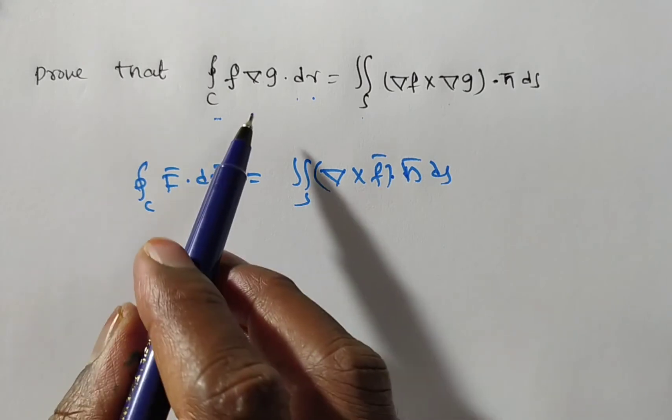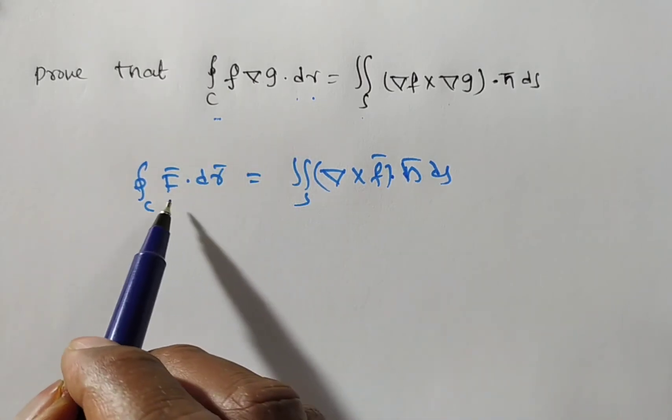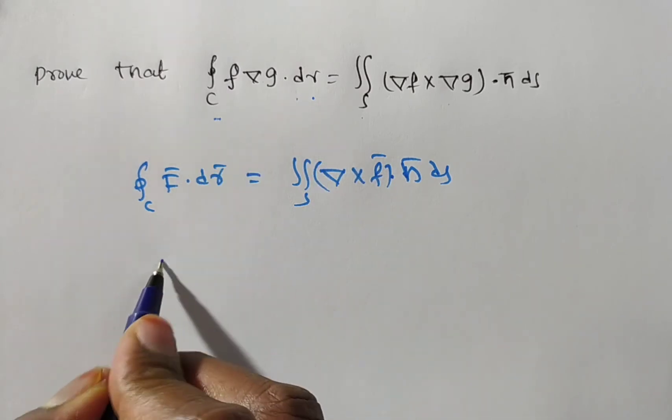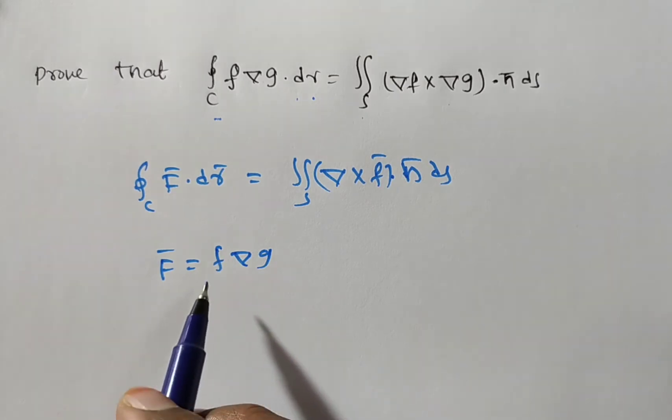Now by observation of the given problem, from the given problem what you can say dr coefficient is here f bar, here f bar is equal to f del g. So apply the Stokes theorem.